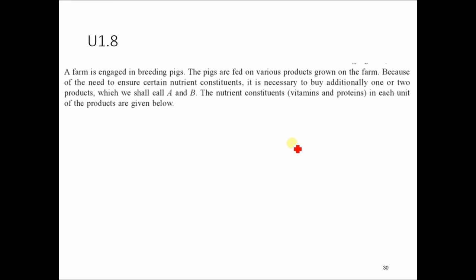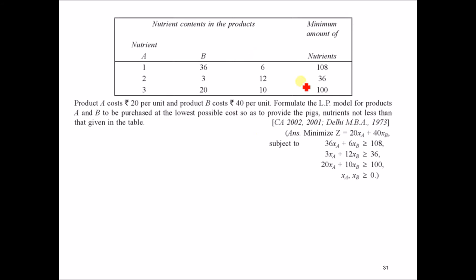A farm is engaged in breeding pigs. Pigs are fed on various products grown on the farm. To ensure certain nutrient constituents, it is necessary to buy additional products A and B. The nutrient constituents per unit are given in a table. The problem asks for the minimum amount of nutrients, so it is a minimization problem. The cost is 20 per unit for A and 40 per unit for B. The objective function and constraints are: 36xA plus 6xB ≥ 108, 3xA plus 12xB ≥ 36, 20xA plus 10xB ≥ 100, and xA, xB ≥ 0.